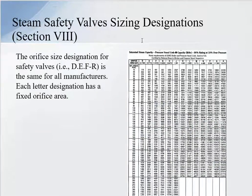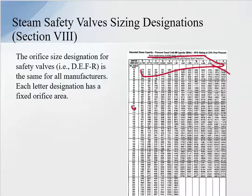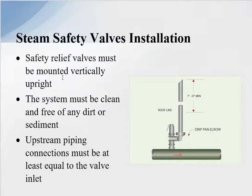Safety valve sizing is designated by letters indicating the effective orifice area: K, L, M, N, P, and others. For example, at a set pressure of 100 PSI, a P orifice has a capacity of roughly 37,012 pounds per hour. If you see a valve labeled 4x6 P, the P refers to the orifice size inside the safety valve. A safety relief valve must be mounted in the vertical position, because the manufacturer sets and calibrates the valve in the vertical position, and the installation must duplicate that orientation.